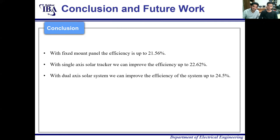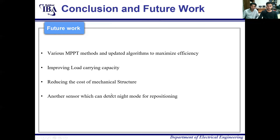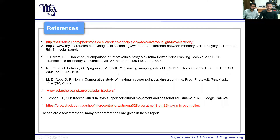These results were taken with a DC fan as a load connected to the solar tracker. For future work, we can design various MPPT methods and algorithms to maximize efficiency and improve load carrying capacity. We can also benefit from a better mechanical structure, and the sensors can be modified by repositioning. Here are the references from which we got the idea and help.